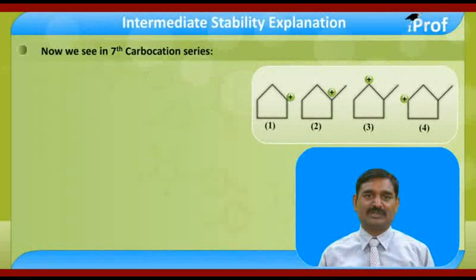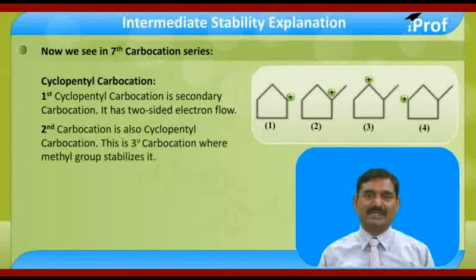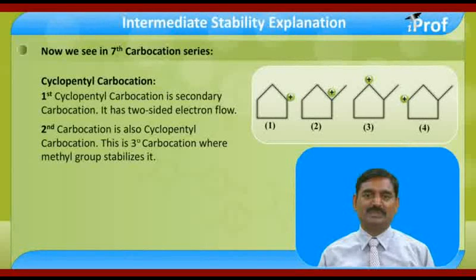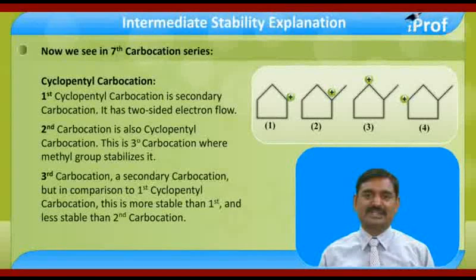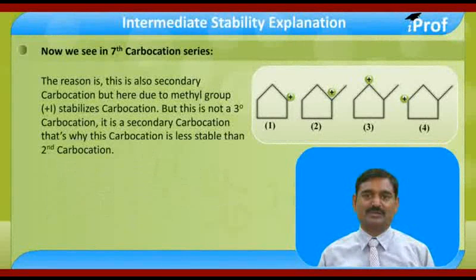Now we examine the cyclopentyl carbocations. The first cyclopentyl carbocation is a secondary carbocation with two-sided electron flow. The second cyclopentyl carbocation is a tertiary carbocation — a methyl group stabilizes this carbocation. In the third carbocation, this is a secondary carbocation, but compared to the first cyclopentyl carbocation it is more stable than the first but less stable than the second. The reason is that due to the methyl group, +I stabilizes this carbocation.